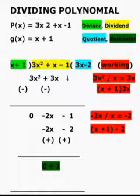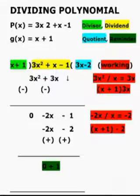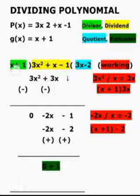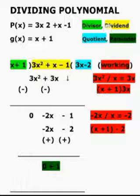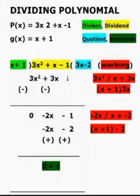3x² + x - 1 divided by x + 1. x + 1 is called the divisor. 3x² + x - 1 is the dividend. 3x - 2 is the quotient and 1 is the remainder.